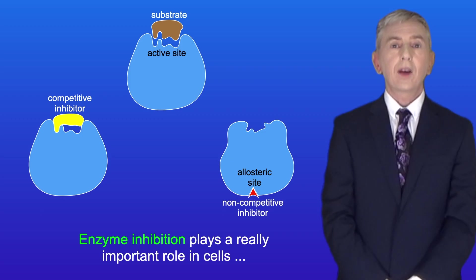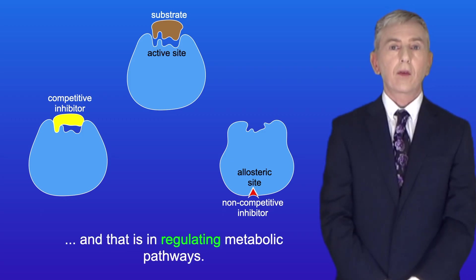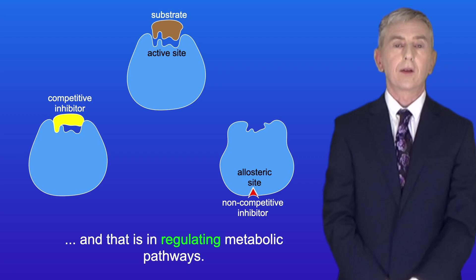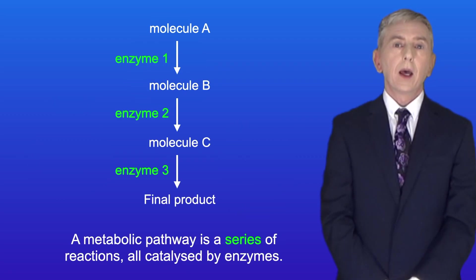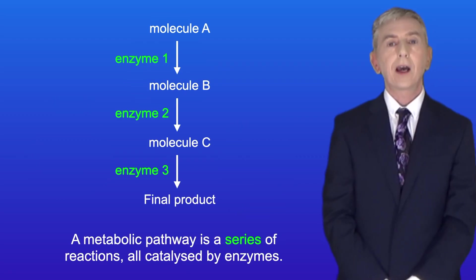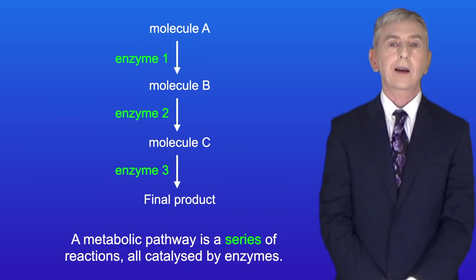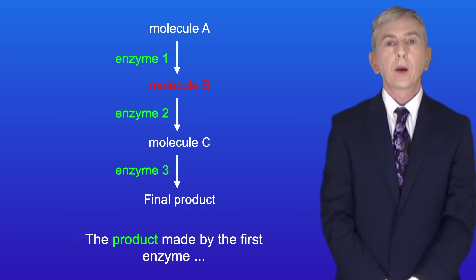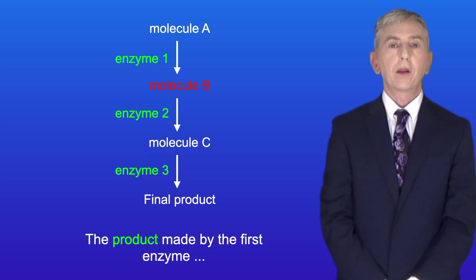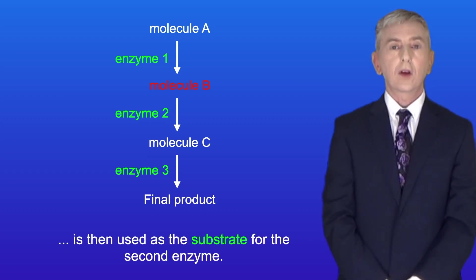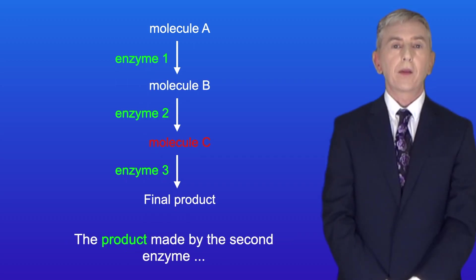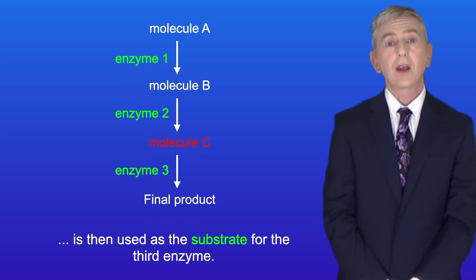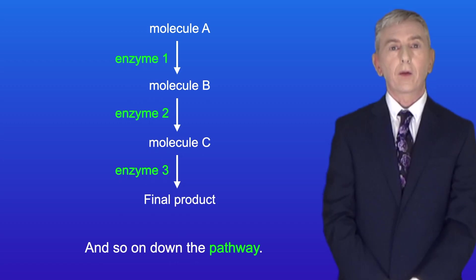Now enzyme inhibition plays a really important role in cells, and that is in regulating metabolic pathways. A metabolic pathway is a series of reactions all catalyzed by enzymes. The product made by the first enzyme is then used as the substrate for the second enzyme, and the product made by the second enzyme is then used as a substrate for the third enzyme, and so on down the pathway.